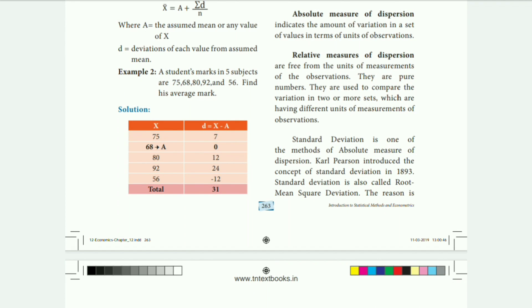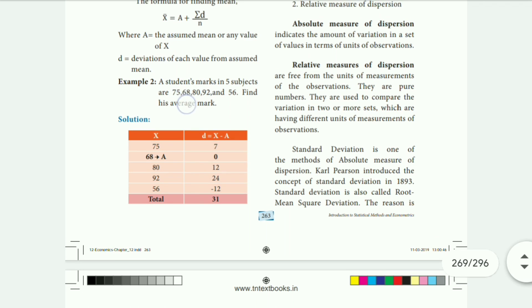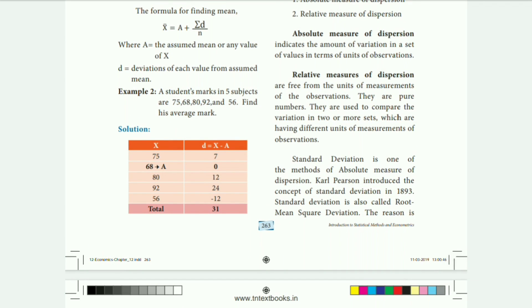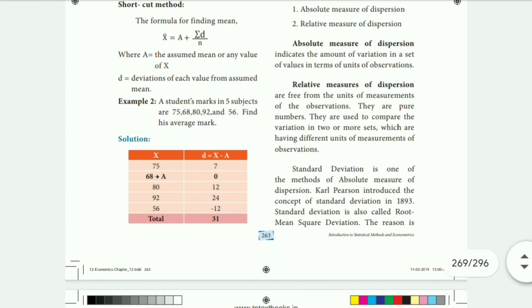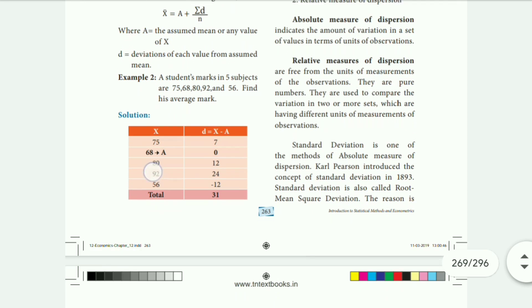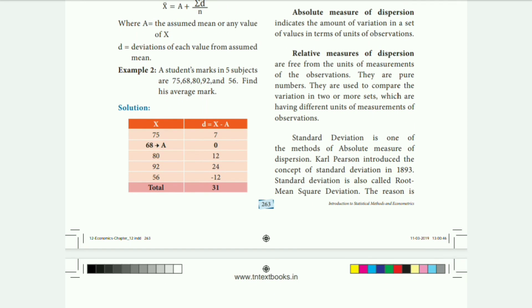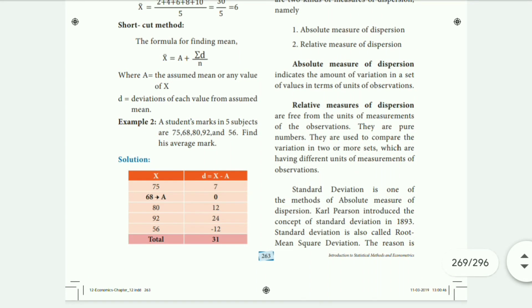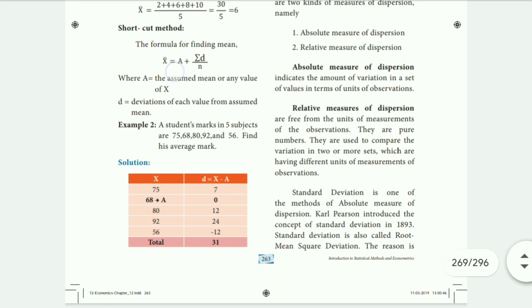Now look at Example 2: student marks in 5 subjects are 75, 68, 80, 92, and 56. We find the average mark using the assumed mean method. The formula is: mean = A plus summation D by N.